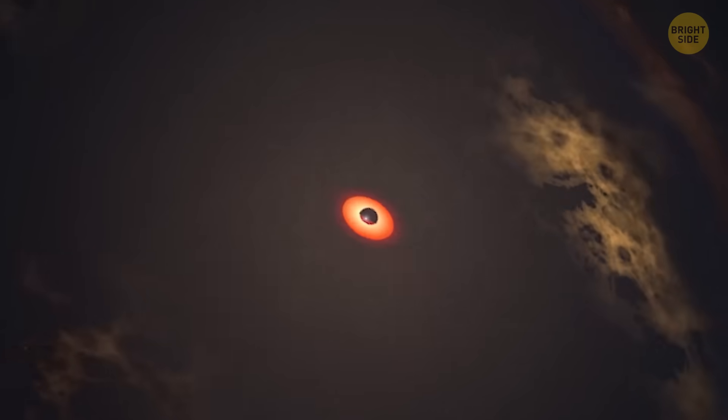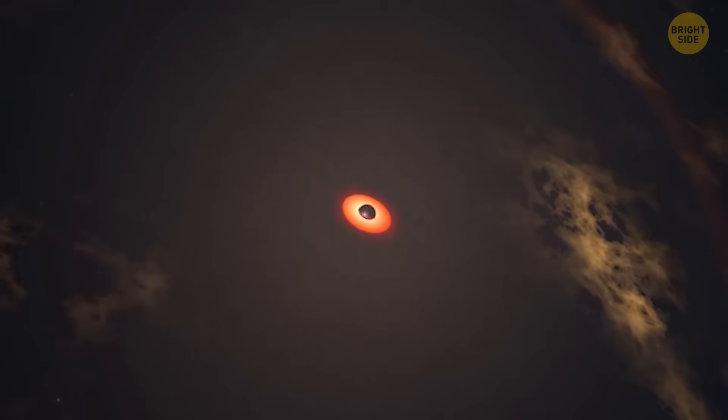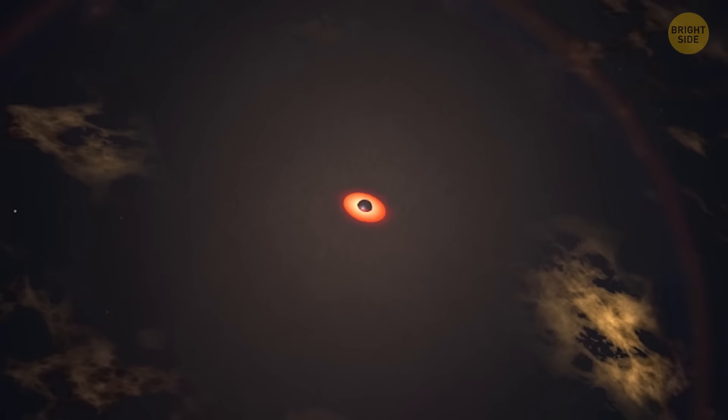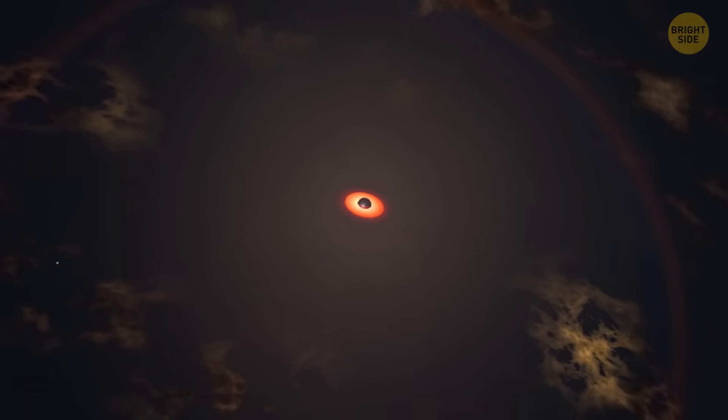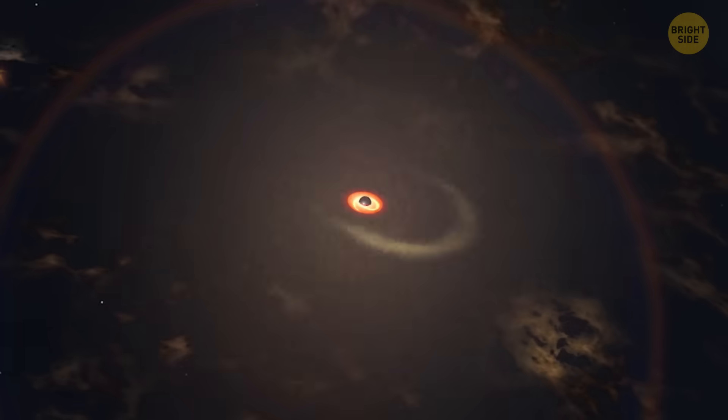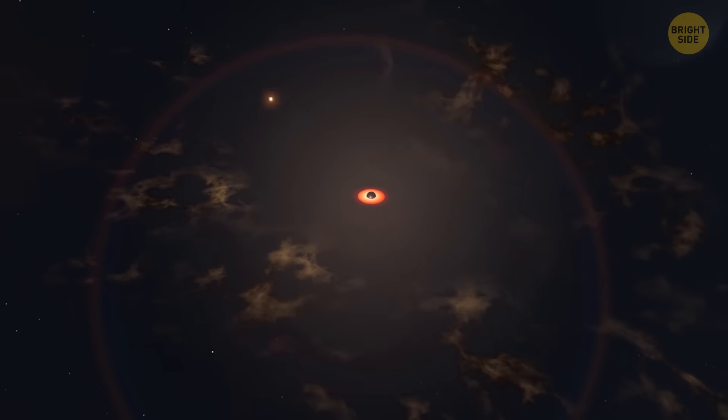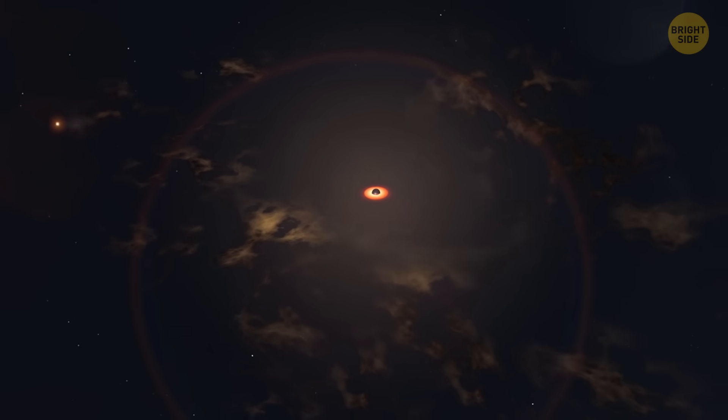However, before the debris settles into the disk, it overshoots the black hole in an elliptical path, only to be pulled back in. At one point in this path, the debris collides violently with other parts of the star being pulled in, and that's when we start to see the first bursts of emissions.